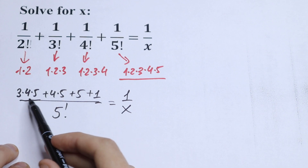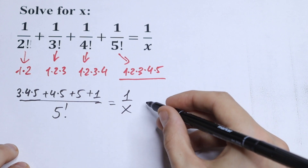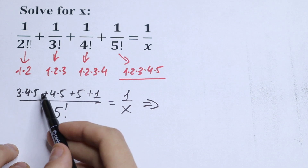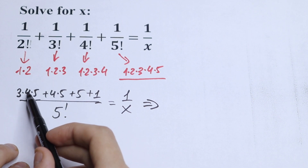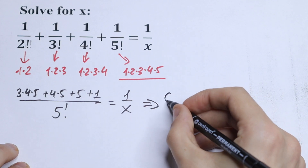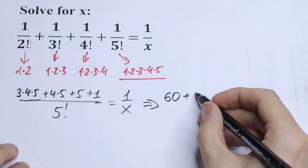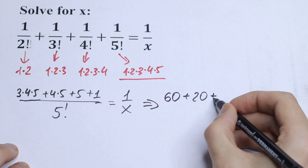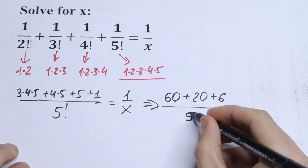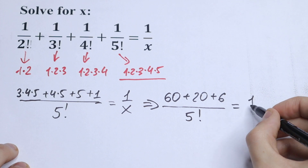We can add all of these since they are not huge numbers. Let's simplify: 3 times 4 is 12, times 5 is 60. Plus 4 times 5 is 20. And plus 6. All over 5 factorial, equal to 1 over x.